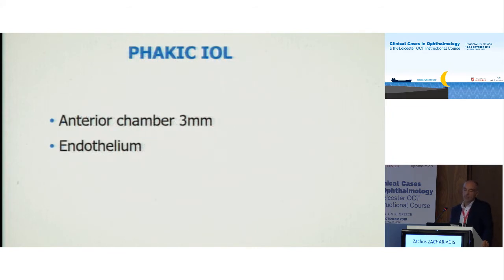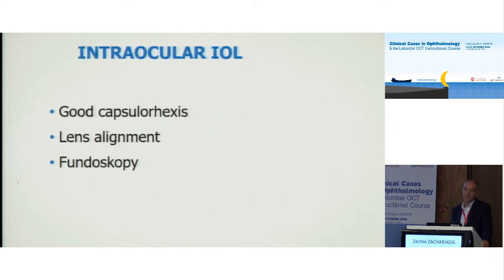If we have to put a PHAKIC IOL, we must always consider the depth of the anterior chamber to have enough space, and the endothelial cell count. For intraocular lenses, we need a perfect capsulorhexis — five millimeters is the ideal size. We must align the lens perfectly and always have good information about the fundus.